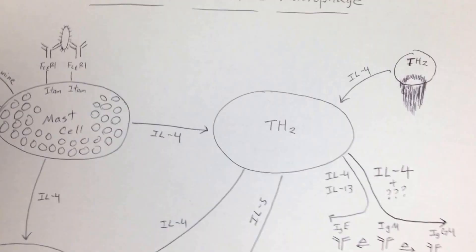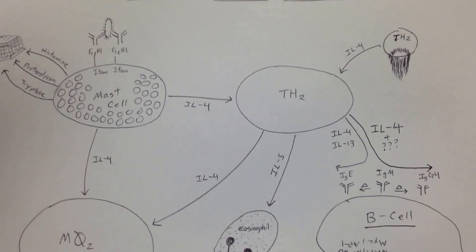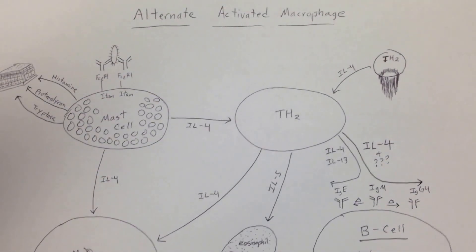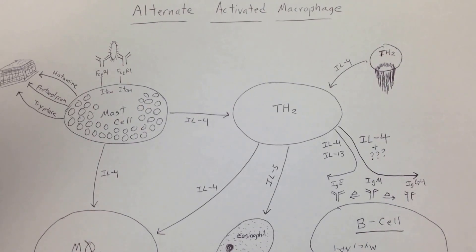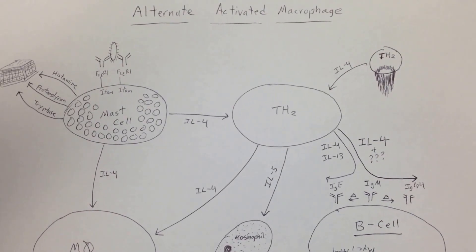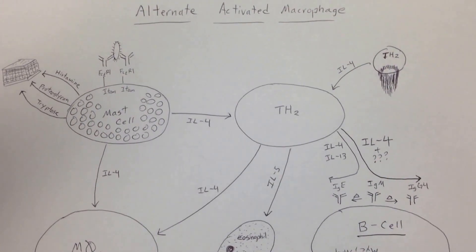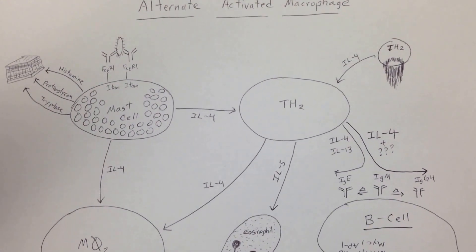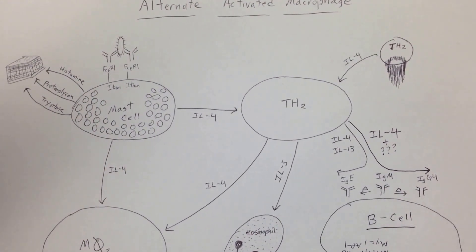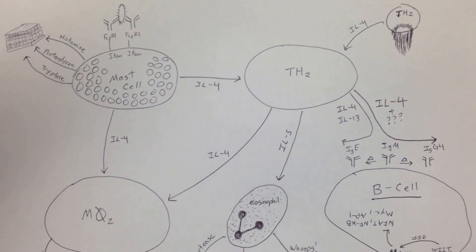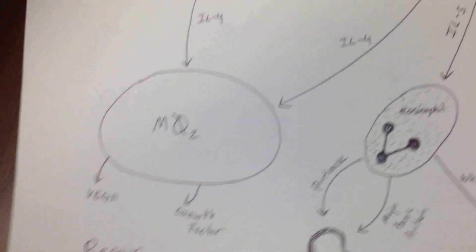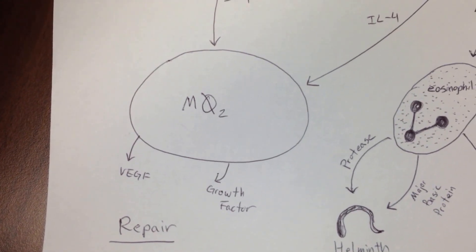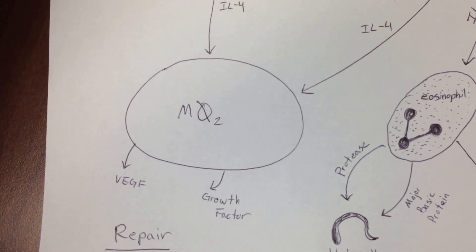If we look at this chart, we can see that this is called the alternate activated macrophage. The other one was the classically activated macrophage, or the M1. This is our M2. It's at the bottom left here. Let's take a look at it—M2, our repair macrophage.